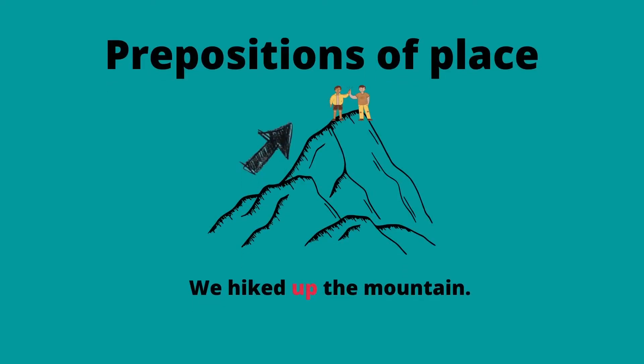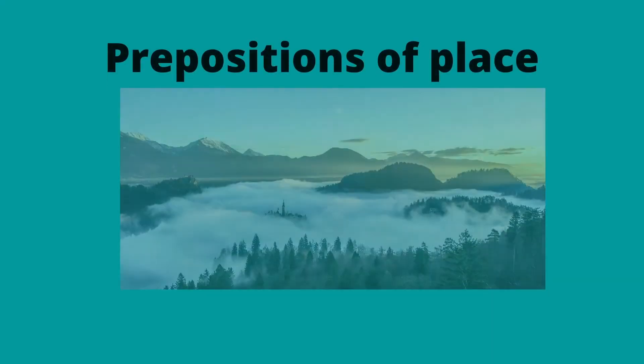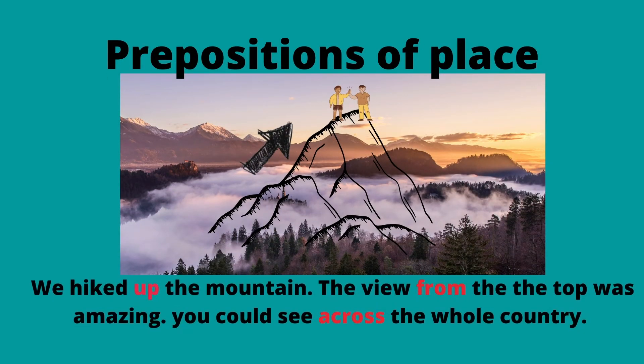Scenario: you and your friend are hiking. In which direction do you go first? You go up — except if you parachute down from a plane, but then you still kind of go up with the plane. So you always have to go up first. With the preposition 'up' you say: 'We hiked up the mountain.'